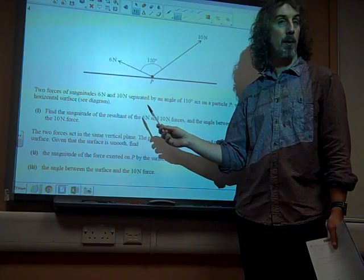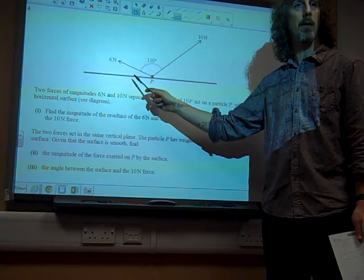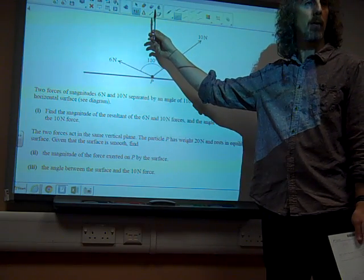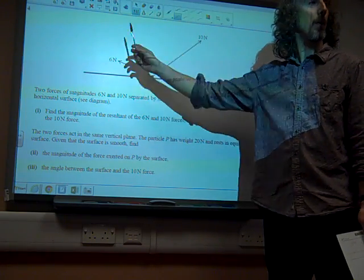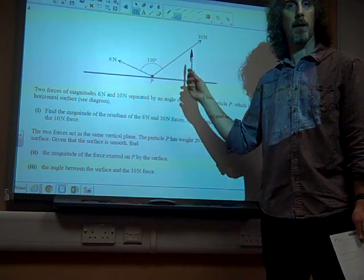The fact that it's in equilibrium, in fact, means that the resultant of these two forces has to be vertical. Otherwise, it would be moving to one side. It would have a resultant force in either direction.